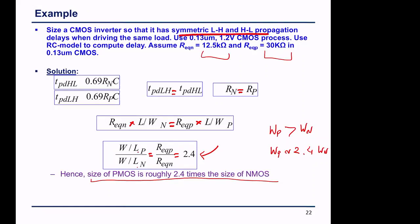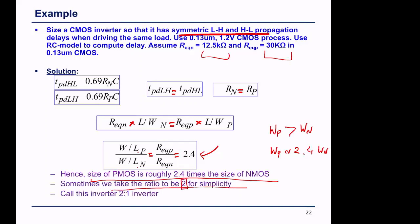For a symmetric 2-to-1 inverter, the minimum size has WN equal to 1 μm and WP equal to 2 μm. If we scale by S, WP becomes 2S and WN becomes S. This is the 2-to-1 naming convention. Sizing larger (e.g., times 2) means multiplying both pull-up and pull-down by the same factor.